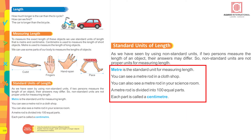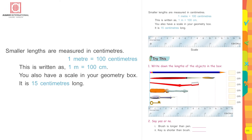Meter is the standard unit for measuring length. You can see a meter rod in a cloth shop or in your science room. A meter rod is divided into one hundred equal parts; each part is called a centimeter. Smaller lengths are measured in centimeters. One meter equals one hundred centimeters, written as 1 m — where 'm' is the abbreviation for meter.